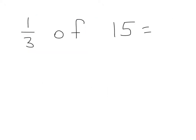OK, this problem is 1 third of 15. So the denominator tells me what I'm going to skip count. And I'm going to skip count all the way to 15 to find 1 third of 15: 3, 6, 9, 12, and 15.